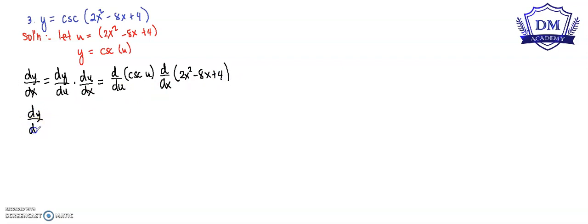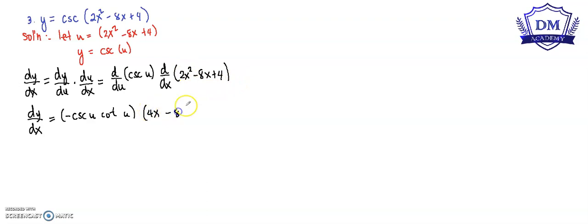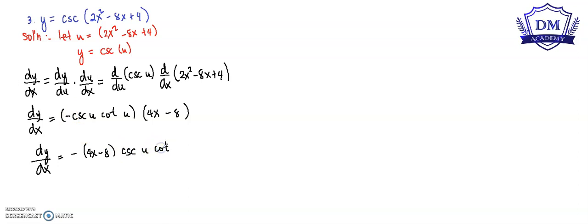So dy over dx is equal to: the derivative of cosecant u is negative cosecant u cotangent u, multiplied by the derivative of 2x squared minus 8x plus 4, which is 4x minus 8. So our dy over dx is equal to negative cosecant u cotangent u times (4x minus 8).